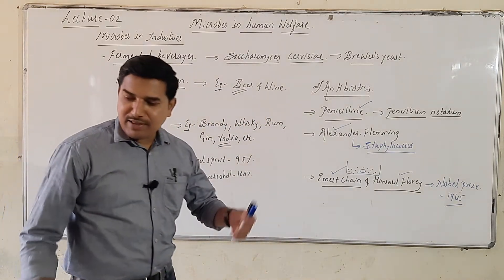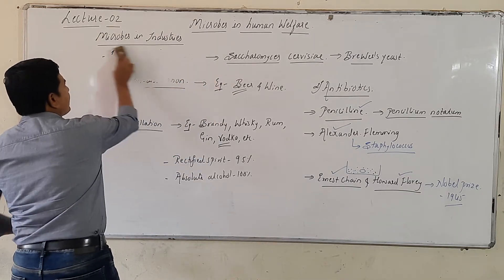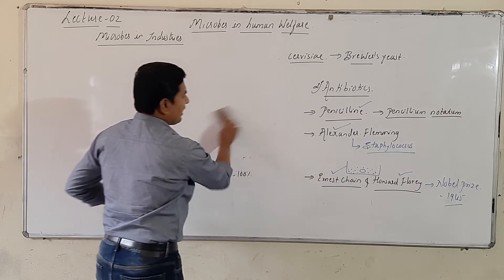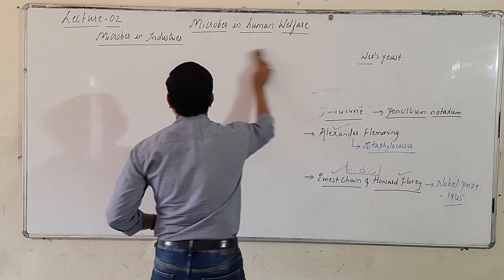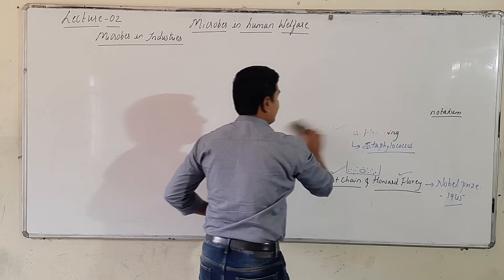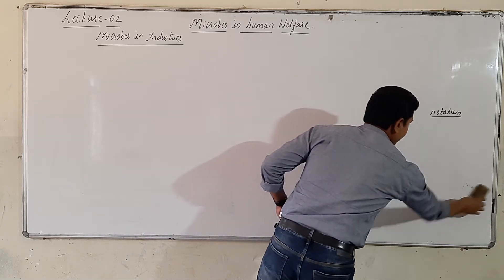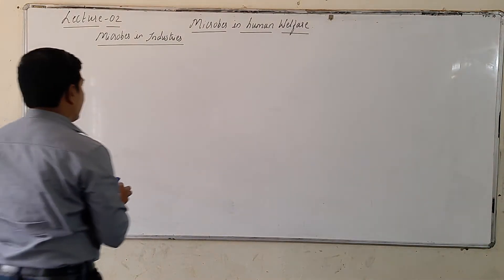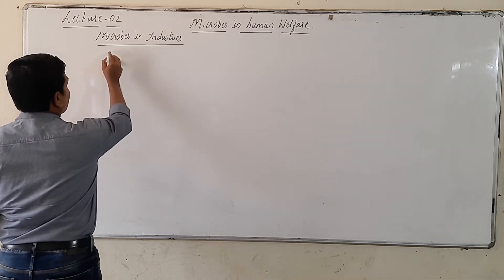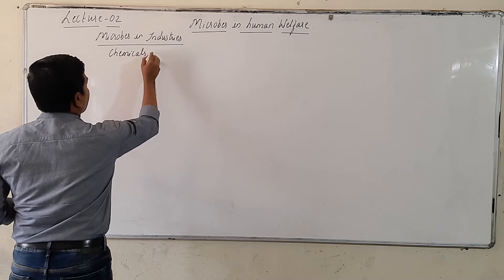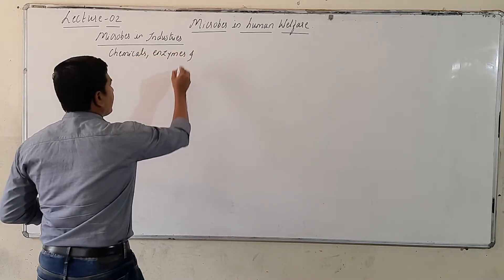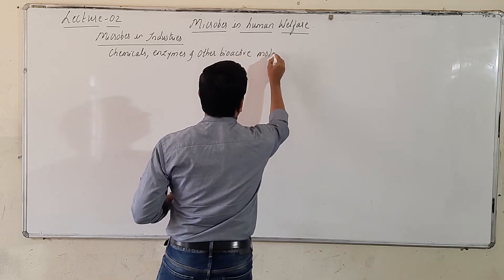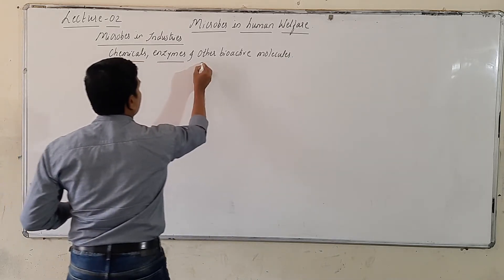Today we have many thousands of varieties of antibiotics like tetracycline, erythromycin, gentamicin, azithromycin, and others. These are obtained from various sources - mainly from bacteria and fungi - but the first antibiotic obtained was from the fungus Penicillium notatum. This completes the second heading: antibiotics. The last heading of this industrial part concerns chemicals, enzymes, and bioactive molecules.